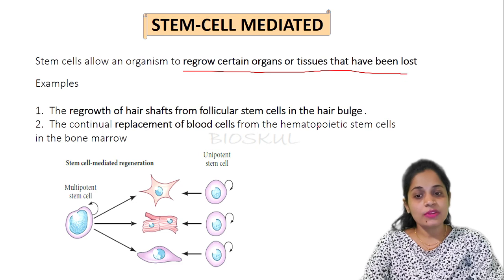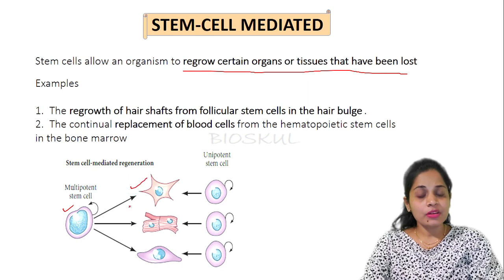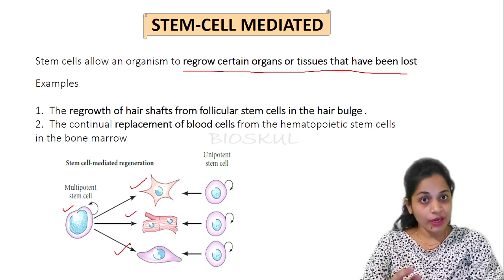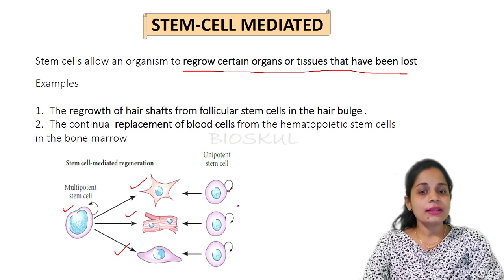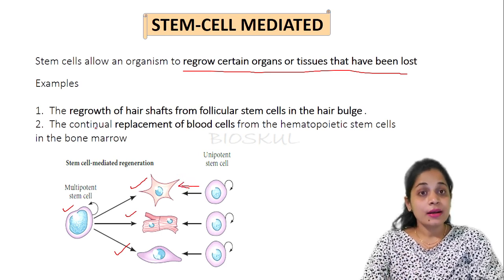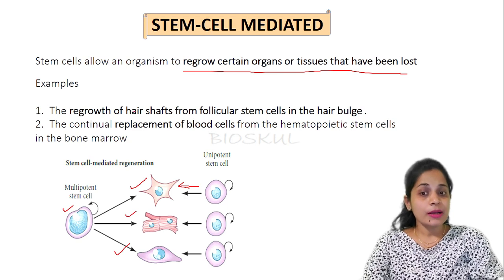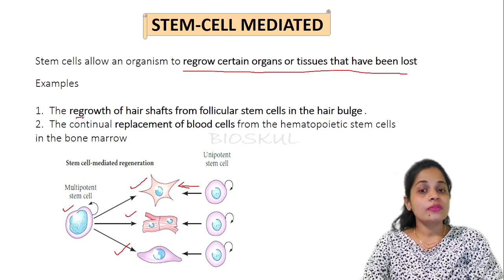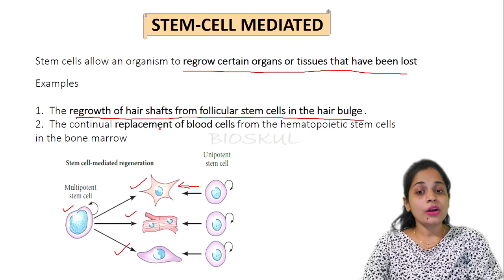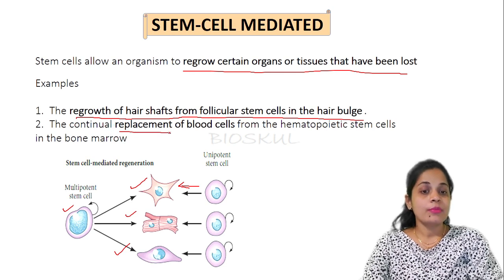In the diagram, you can observe that multipotent stem cells can give rise to many types of cells, but it is limited compared to pluripotent stem cells. Unipotent stem cells can give rise to only one type of cell. Examples of stem cell mediated regeneration include the regrowth of hair shafts from follicular stem cells in hair follicles, and the continual replacement of blood cells from hematopoietic stem cells in the bone marrow.